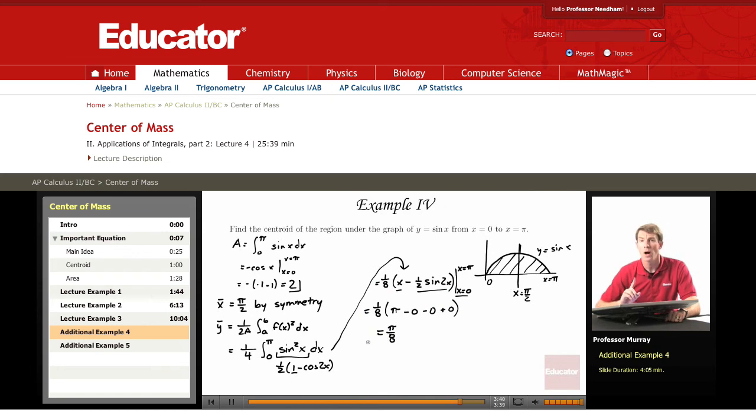And that was the y coordinate of the centroid. So if we package those two answers together, x bar, y bar, we get pi over 2, pi over 8. x bar is the balance point of this region.